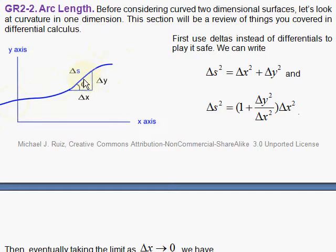The little arc length along this curve can be obtained by the Pythagorean theorem. Δx² plus Δy² will give you Δs².